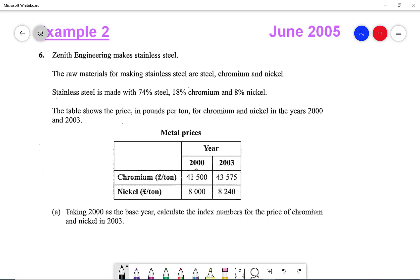So we've got Zenith Engineering Company makes stainless steel. The raw materials for making stainless steel are steel, chromium and nickel. And stainless steel is made with 74% steel, 18% chromium and 8% nickel.